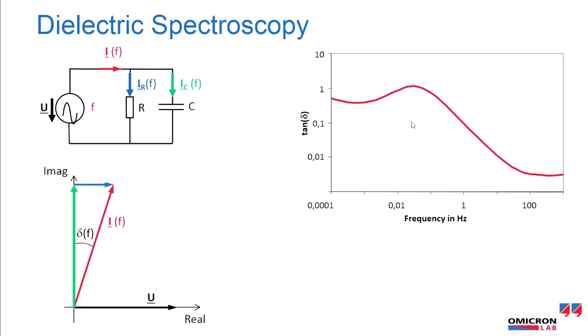The ratio of lost energy to stored energy is the relative losses of a dielectric material, the tangent delta. From this measurement method we derive tangent delta, permittivity, and capacitance.